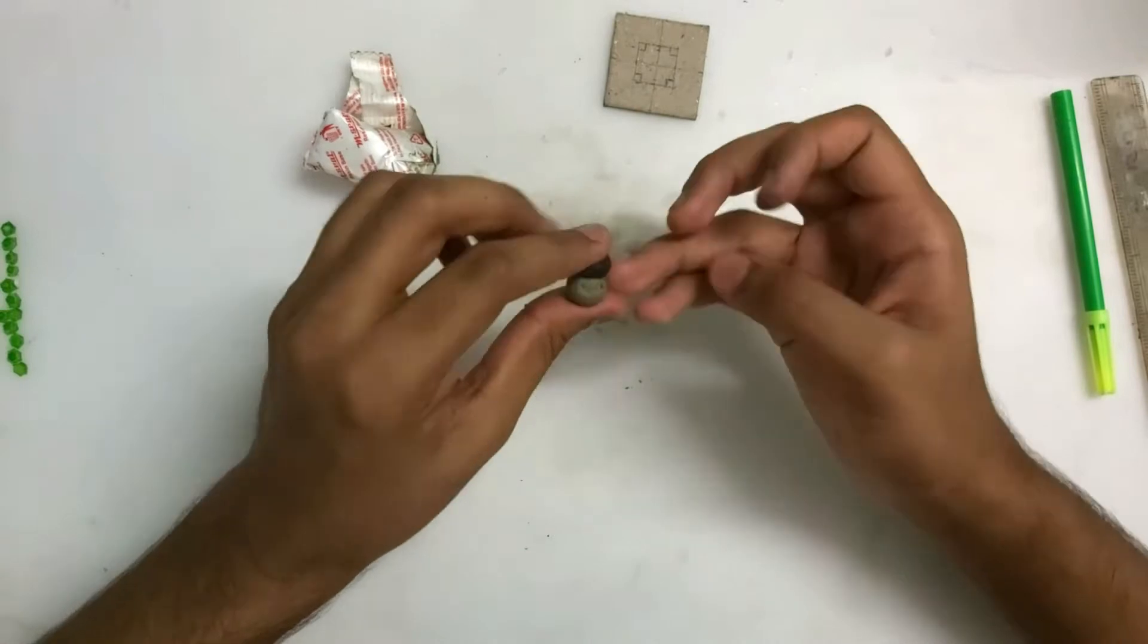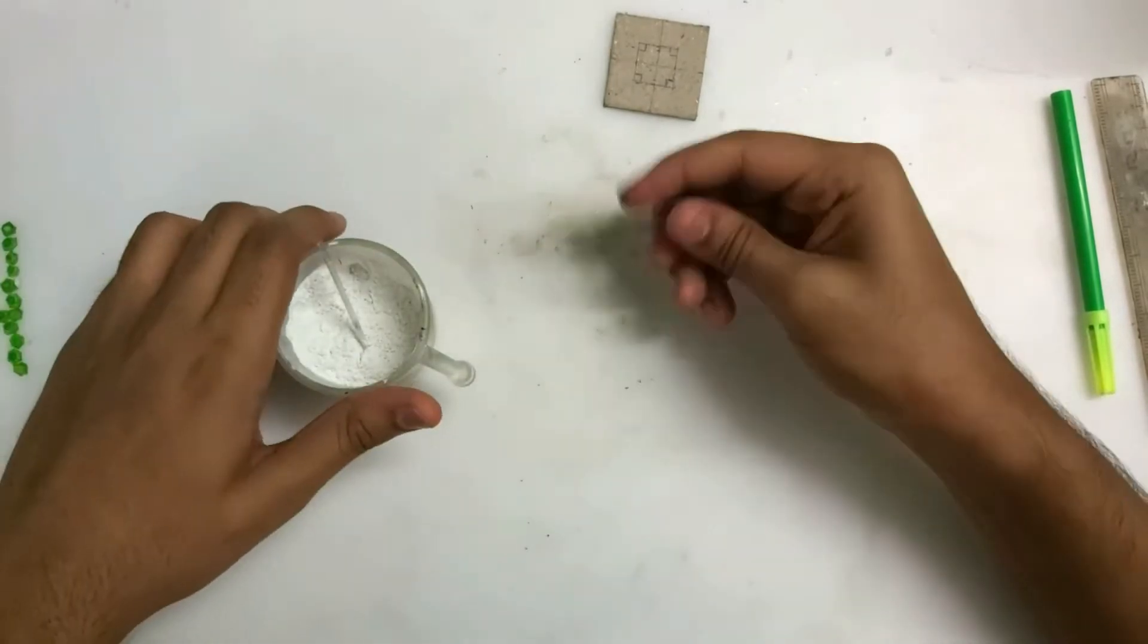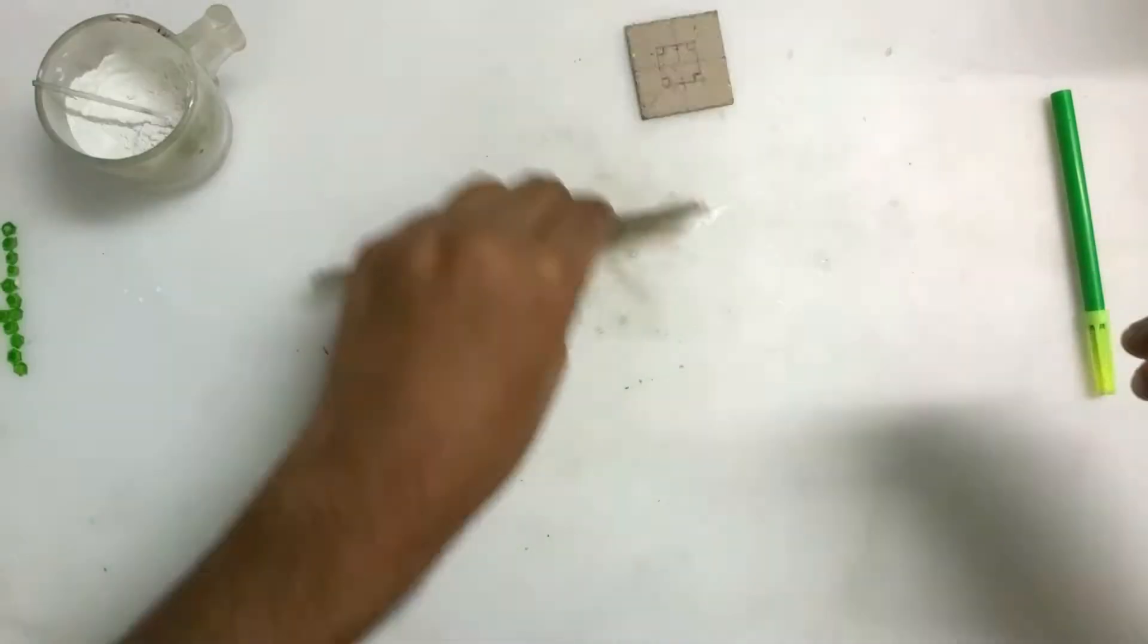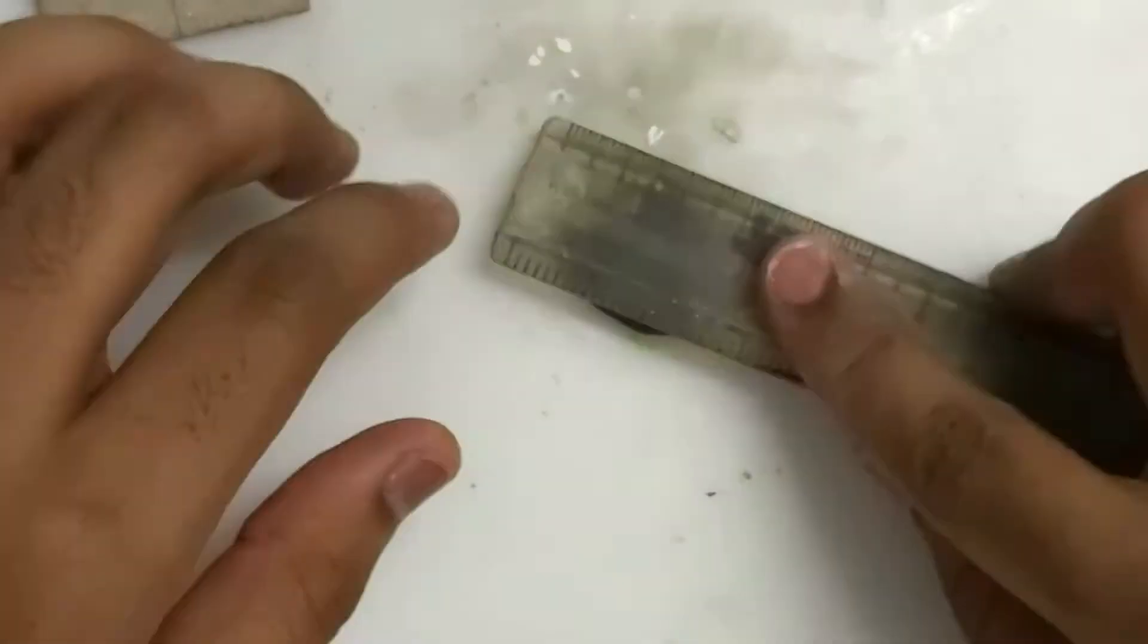Now let's go ahead and start making the body of the box part of the gem box. Now I'm going to mix the polymer clay with some talcum powder to help it dry faster.